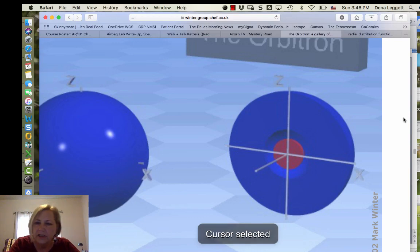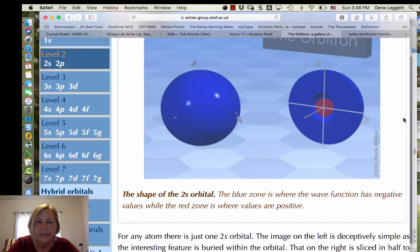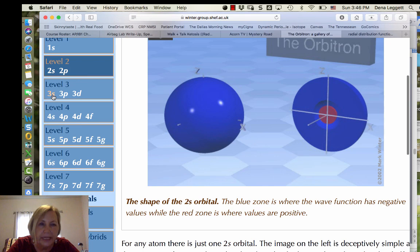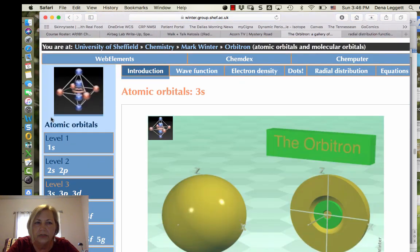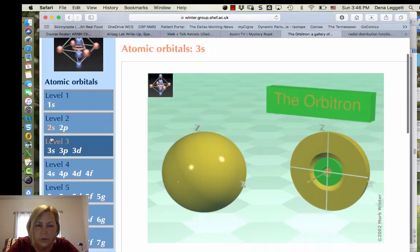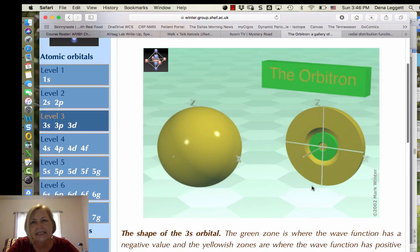A region in space where there's zero probability of finding an electron with a given energy. Okay, so now the 2s has one node. So now if you look at the 3s, so the 1s has zero nodes, the 2s has one node, the 3s, hopefully you're seeing that pattern.